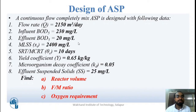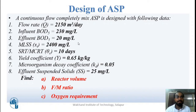We have one question: a continuous flow complete mixed ASP is designed with the following data. Flow rate Q = 2150 m³/day, influent BOD = 230 mg/L, desired effluent BOD5 = 20 mg/L, MLSS (XT) = 2400 mg/L, MCRT or SRT (theta C) = 10 days, yield coefficient Y = 0.65 kg/kg, microorganism decay coefficient KD = 0.05, and effluent suspended solids SS = 25 mg/L.